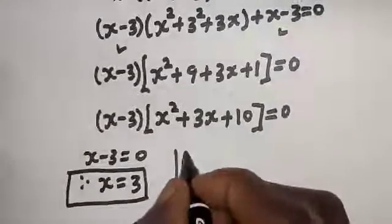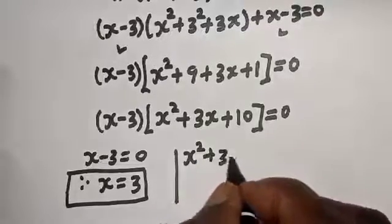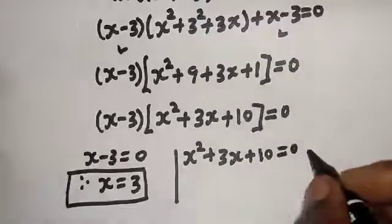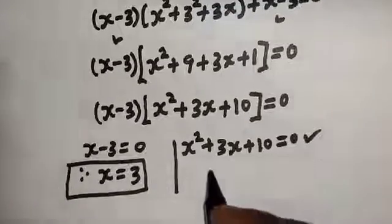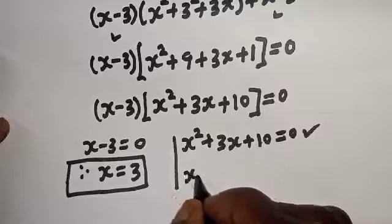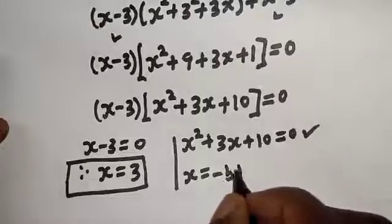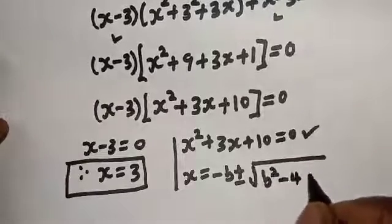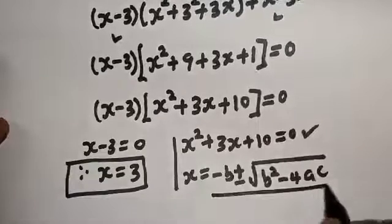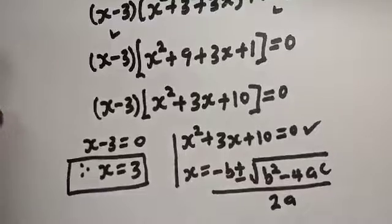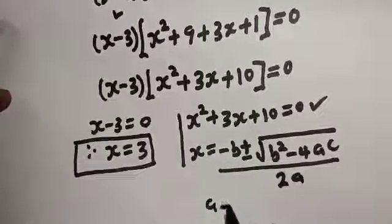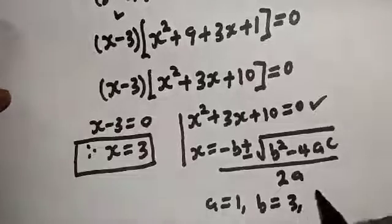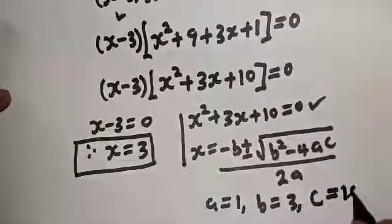The second case is s squared plus 3s plus 10 equals zero. This is a quadratic equation which can be solved using the quadratic formula: s equals minus b plus or minus square root of b squared minus 4ac over 2a, where a equals 1, b equals 3, and c equals 10.